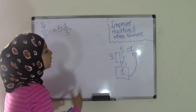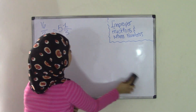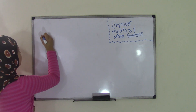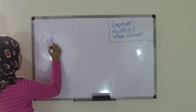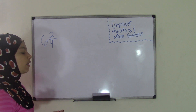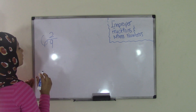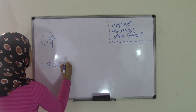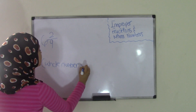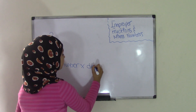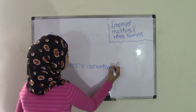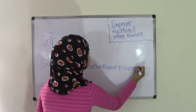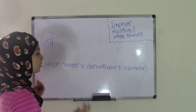Now let's go the opposite direction — we have a mixed number and we need to convert it into an improper fraction. An example is 6 and 2 ninths. Here is the basic formula: whole number times the denominator, plus the numerator. So whole number times denominator plus numerator.